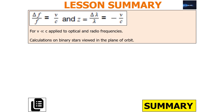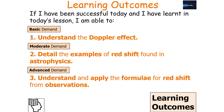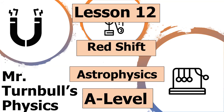In summary, Δf/f = v/c and z = Δλ/λ = v/c, but this only works when v is much smaller than c and applies in the optical and radio frequencies. You should be able to perform calculations on binary stars viewed in the plane of orbit. We should now be able to understand the Doppler effect, detail examples of redshift in astrophysics, and apply the redshift formulae. Thank you very much for watching and have a lovely day.